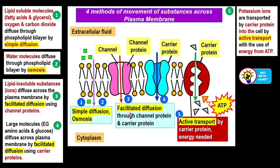Thirdly, we have facilitated diffusion. The word 'facilitated' means this type of diffusion needs the help of a channel protein or carrier protein — the transport proteins — for the substance to move across the plasma membrane. The first type uses a channel protein, which has a straight tunnel or channel. Lipid-insoluble substances such as charged ions like calcium ions and chloride ions diffuse across the plasma membrane by facilitated diffusion using channel proteins, as these ions are small enough to move through the channel.